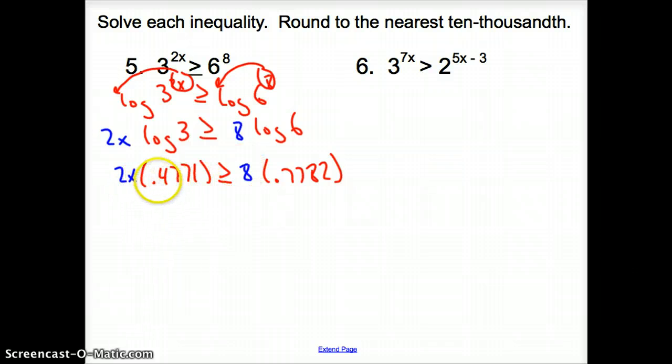Now we can take the log of 3 and log of 6. Log of 3 is 0.4771 greater than or equal to 8 times 0.7782. Multiply these things together. 2 times 0.4771 gives us 0.9541x greater than or equal to 8 times this which is 6.2252.